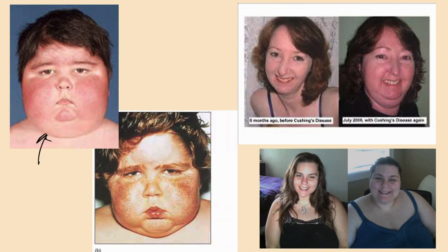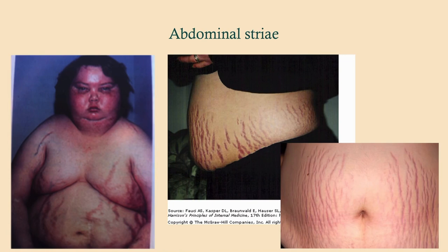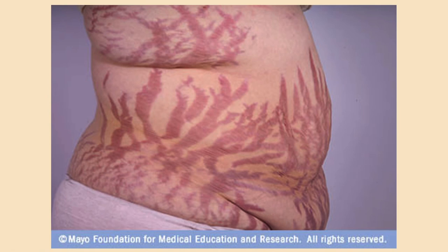This is moon facies — these are probably children on prednisone, perhaps as part of chemotherapy regimens. It would be unusual for a child to develop Cushing's disease, though it can happen. This is the buffalo hump — an unusual distribution of fat, classic in Cushing's. These are abdominal striae — not stretch marks. Stretch marks come from rapid weight changes, but striae in Cushing's are due to thinning of the skin, making the underlying tissue visible. Unfortunately, these are permanent.